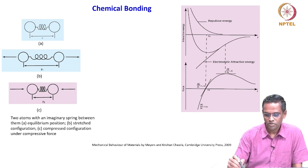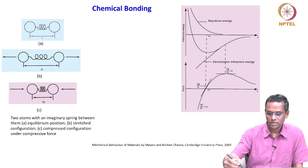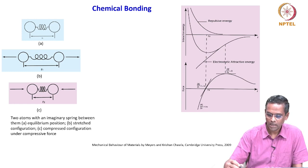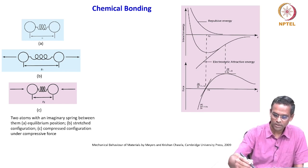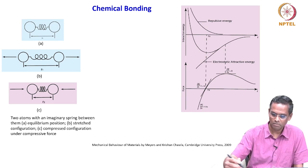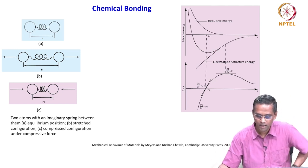This is a plot between interaction energy versus separation R. The top curve is repulsive energy, the bottom is electrostatic attractive energy. The net force is in between — it forms the potential well curve, as it has been popularly known.